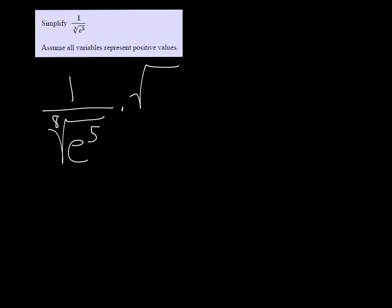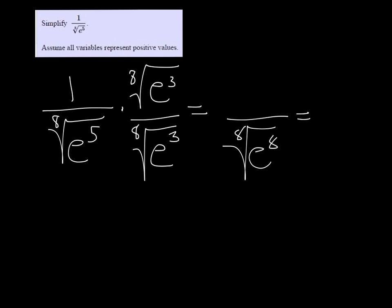So what I'm going to do is multiply the top and the bottom by the 8th root of e cubed. And the reason I'm doing that is because 3 plus 5 is equal to 8. So I'm going to get the 8th root of e to the 8th, which of course is just e,